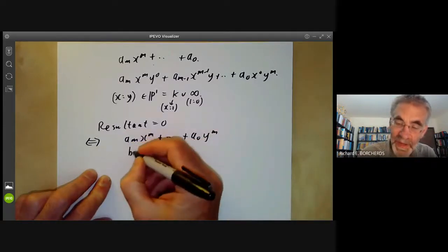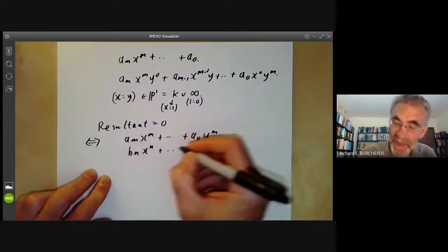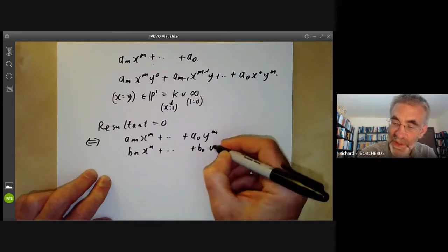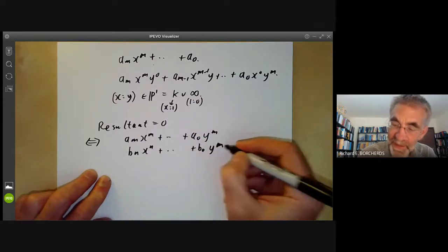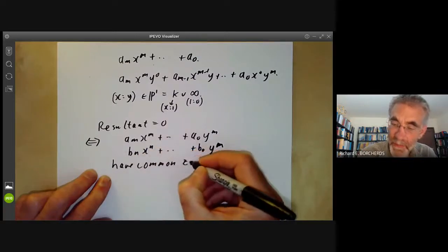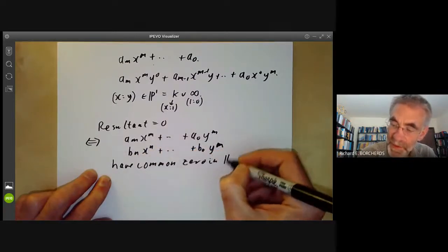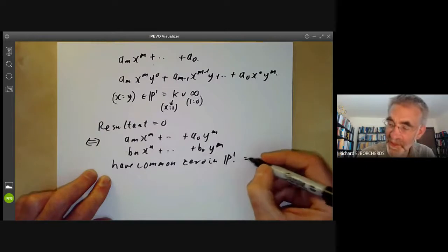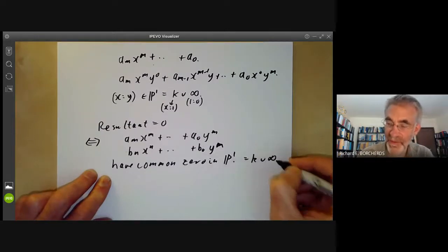And then you can see that the resultant is zero is equivalent to the two homogeneous polynomials, am x to the m plus a0 y to the m, and bn x to the n plus all the way down to plus b0 y to the n, have a common zero in one-dimensional projective space, which is k union a point at infinity.